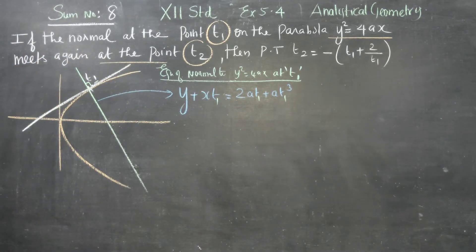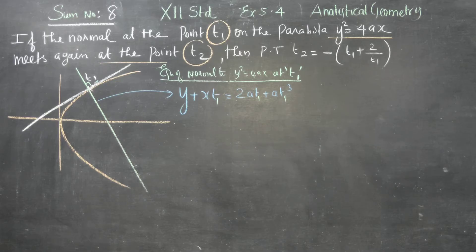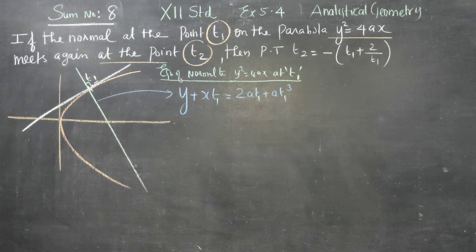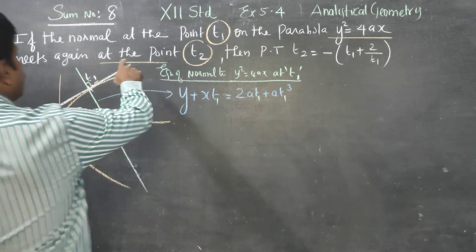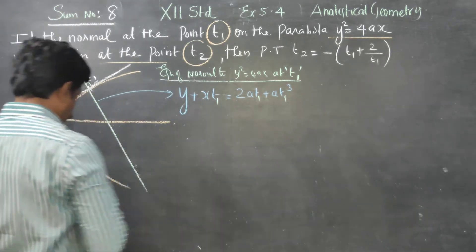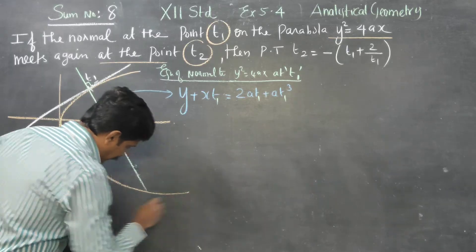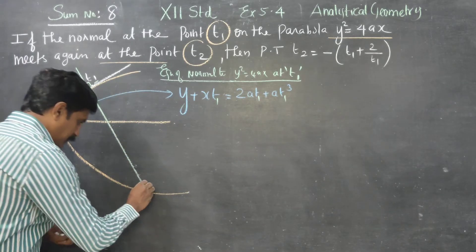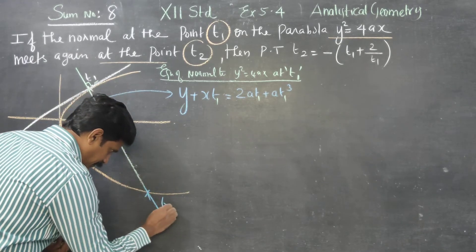So at T1, the equation of normal becomes: Y + xT1 = 2aT1 + aT1³. This is the equation of normal to the parabola at T1. Now, after finding this equation, the normal meets the parabola again at point T2.